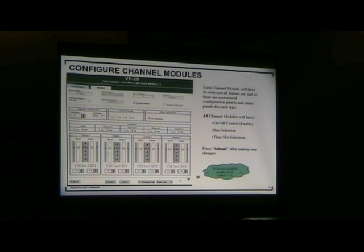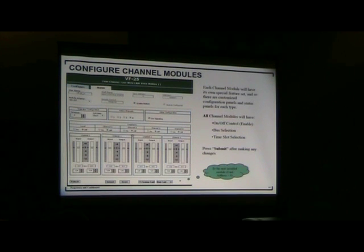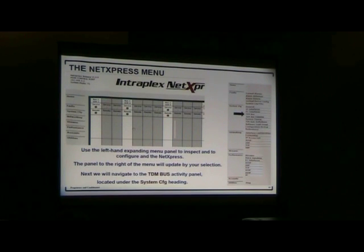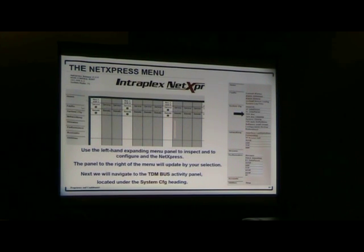Level controls are also available here when you first install the module — levels will be normalized to a nominal line. Loopback tests are also available here, but that gets away from the streaming function. Once time slots are assigned on a card, go to system config and into the TDM map area of the system. This shows time slot activity for any encoding module, and this is where you connect streams in the system for the outbound transmission of simulcast audio.